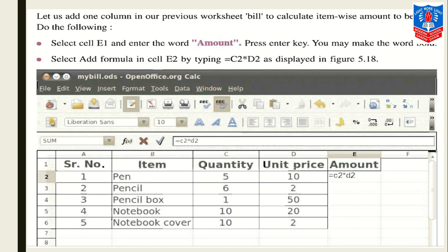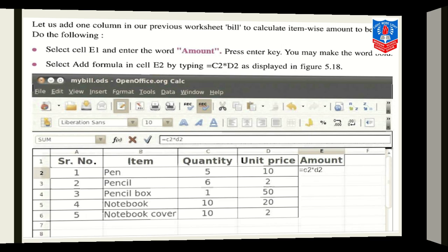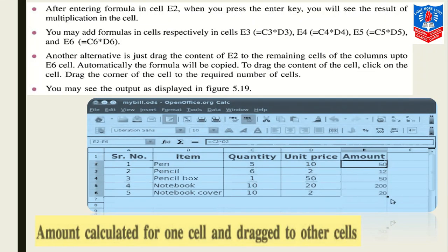Select and add a formula in cell E2 by typing C2 into D2, because this is our C2, which means quantity. As per one pen, the quantity of pen is 5. Our price as per one pen is 10. So we are not multiplying 5 into 10, we are only multiplying with the cell address C2 into D2. Same way we will do for all.